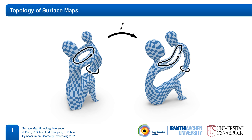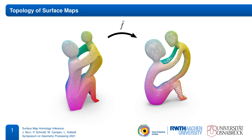They identify matching handles and tunnels and describe how the map twists around them. However, in practice, surface maps are often encoded in ways that are not proper homeomorphisms — for example, sampled maps that encode only a finite number of point-to-point correspondences. Such representations are neither continuous nor bijective and therefore inherently ambiguous about the underlying map topology.